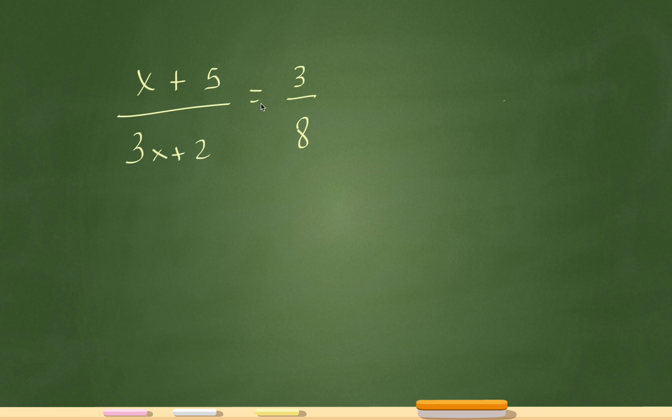X plus 5 divided by 3x plus 2 equals 3 over 8. I have a fraction, there's an equal sign in the middle, cross multiply.